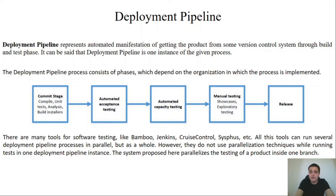There are many tools for software testing like Bamboo, Jenkins, Cruise Control, SIFUS, etc. All those tools can run several deployment pipeline processes in parallel but as a whole. However, they do not parallelize testing inside of one deployment pipeline process and that is what our system is doing.